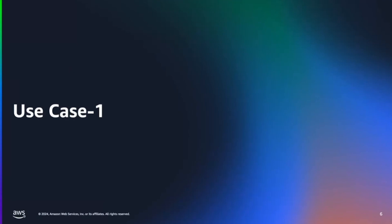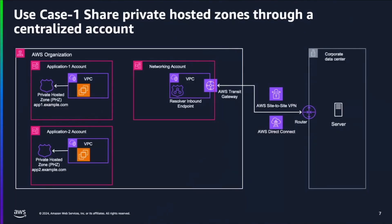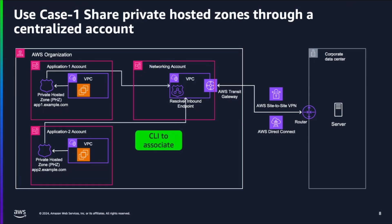Let's talk about the first use case. In this scenario, we have two applications running across two different accounts — account one and account two — and an on-premises data center needs to access these applications. We have set up a networking account with a resolver inbound endpoint. That VPC needs to have access or association with the private hosted zones in those two accounts. Before Route 53 profiles, we used to associate these private hosted zones with the networking account VPC using CLI, and after that the on-premises server was able to resolve these DNS names.